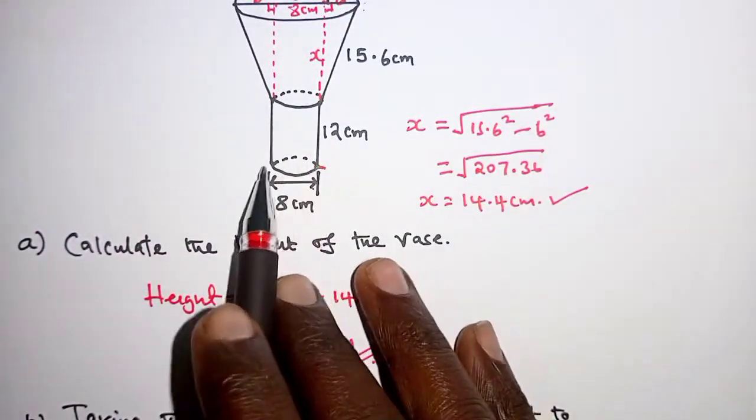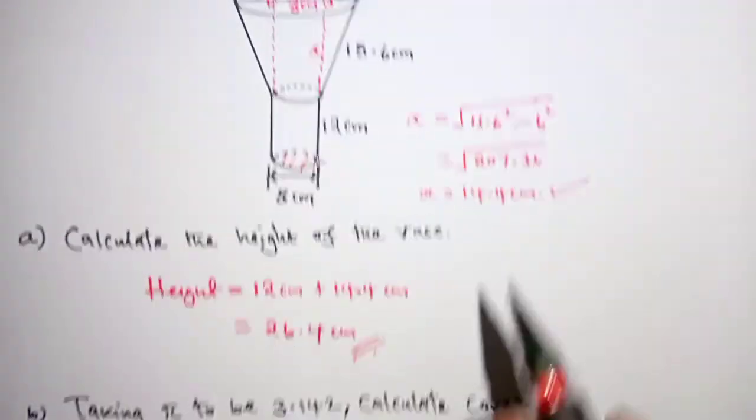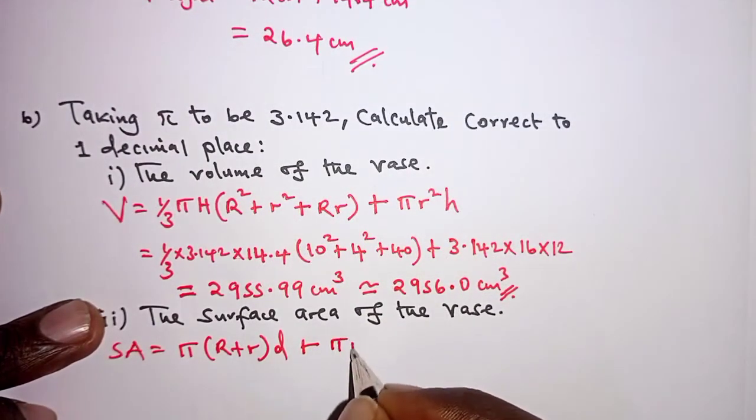and then we'll have to add that to the area of the base of the vase, this lower part, and that is given by pi r squared,